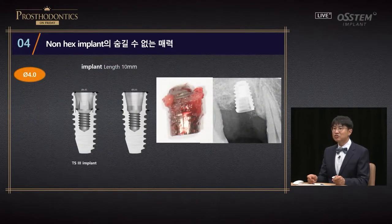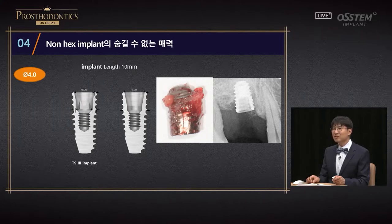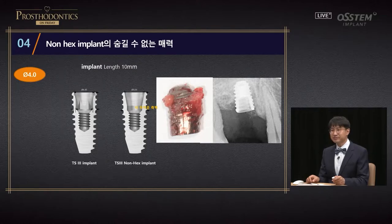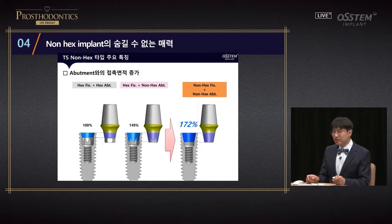I experienced two cases of implant tearing. If you use non-hex implant, you don't need to process the hex; hence the lateral wall can become thicker. Non-hex abutments are more favorable in terms of load distribution because they distribute stress more easily.